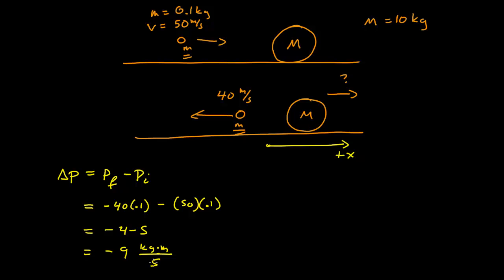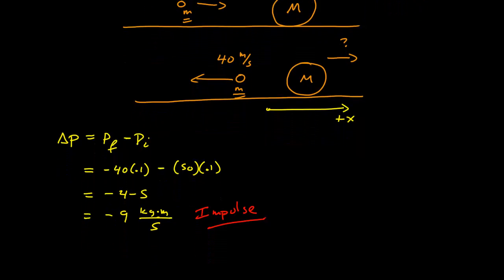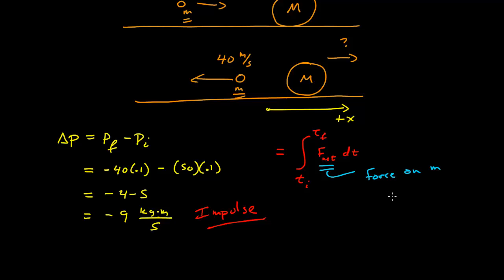So −9 kg·m/s was the total momentum change and therefore the total impulse delivered to the small mass. This impulse equals the time integral of the net force dt, where that net force is the force on the small mass by the large mass — it's what caused the change in momentum of the small mass.